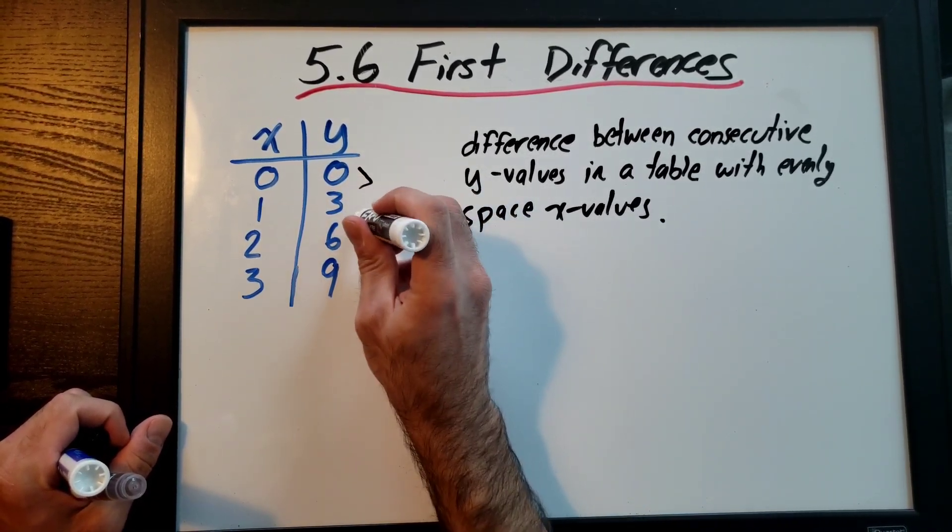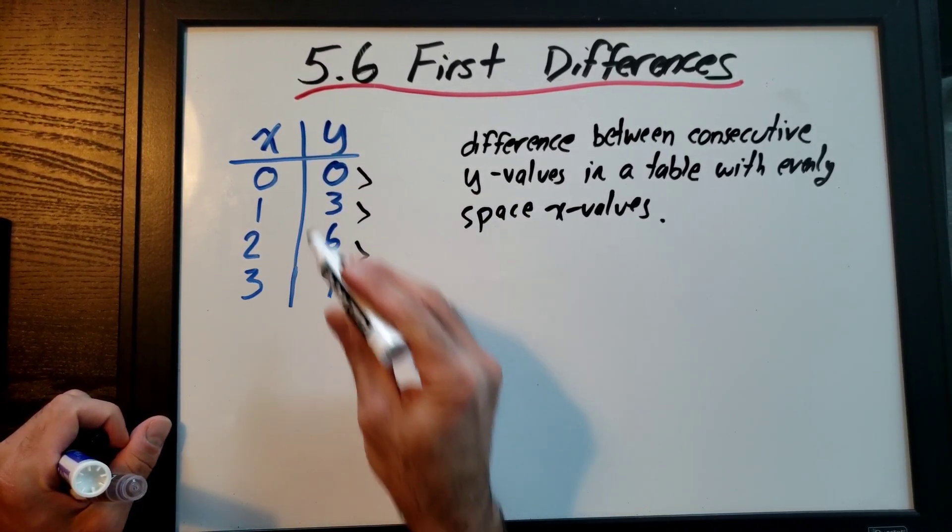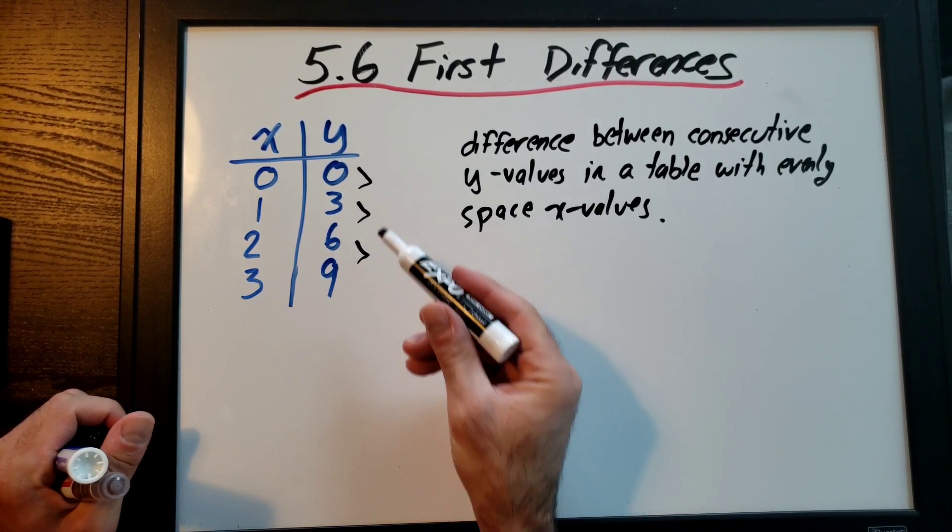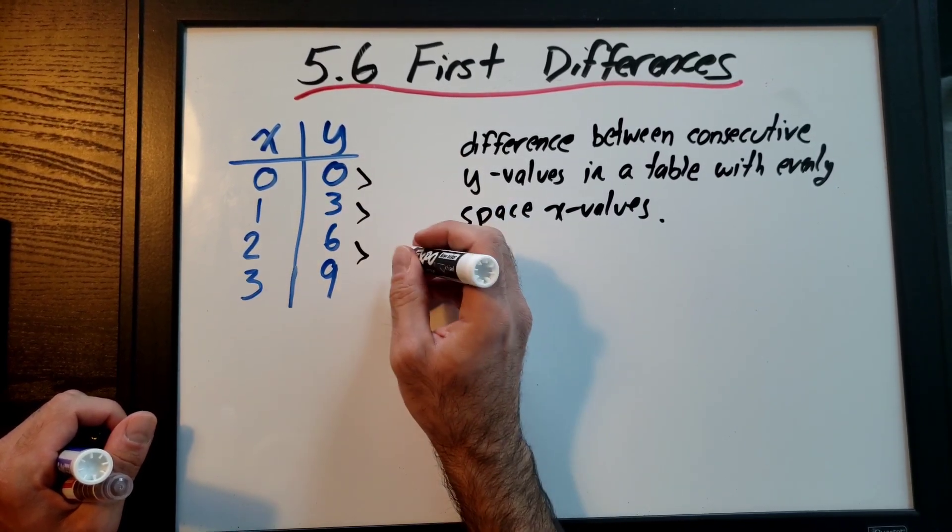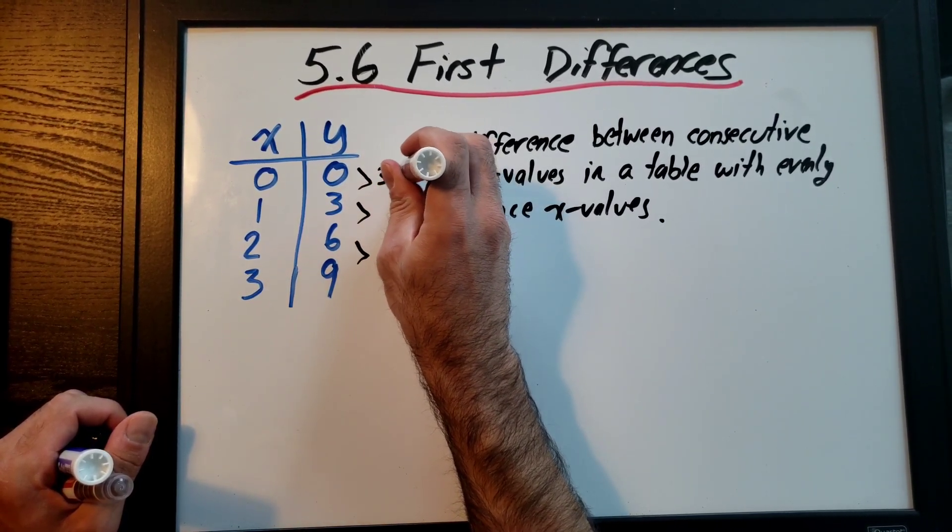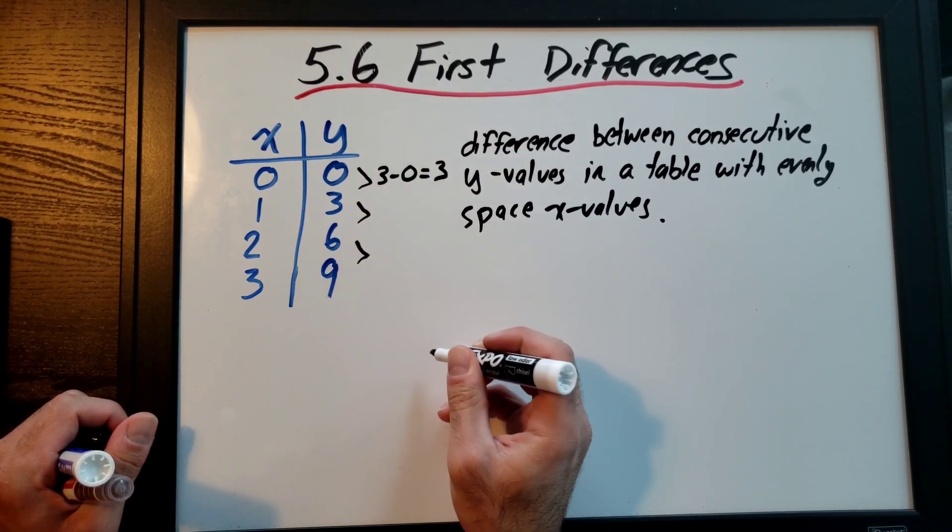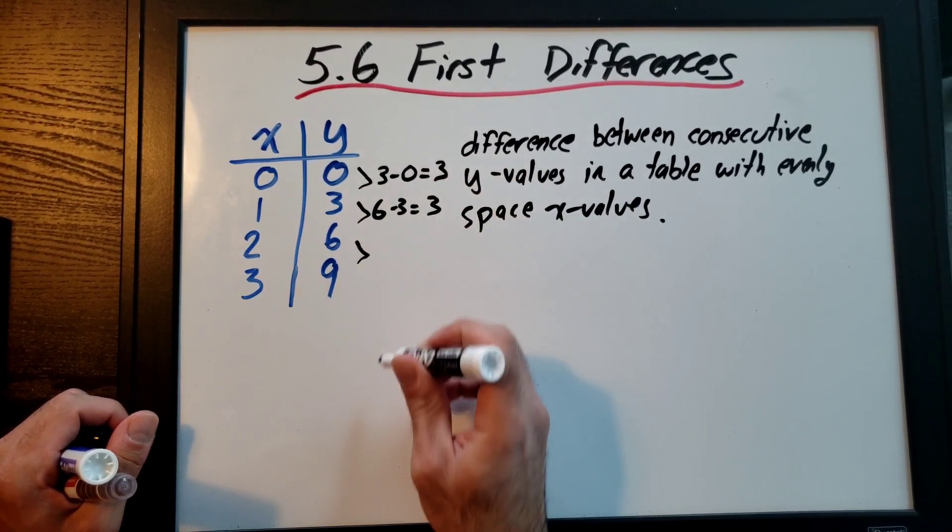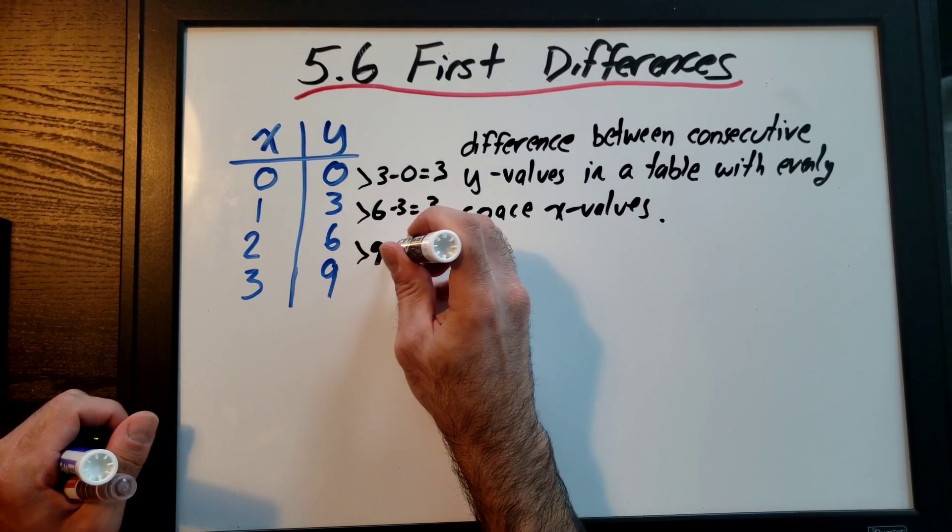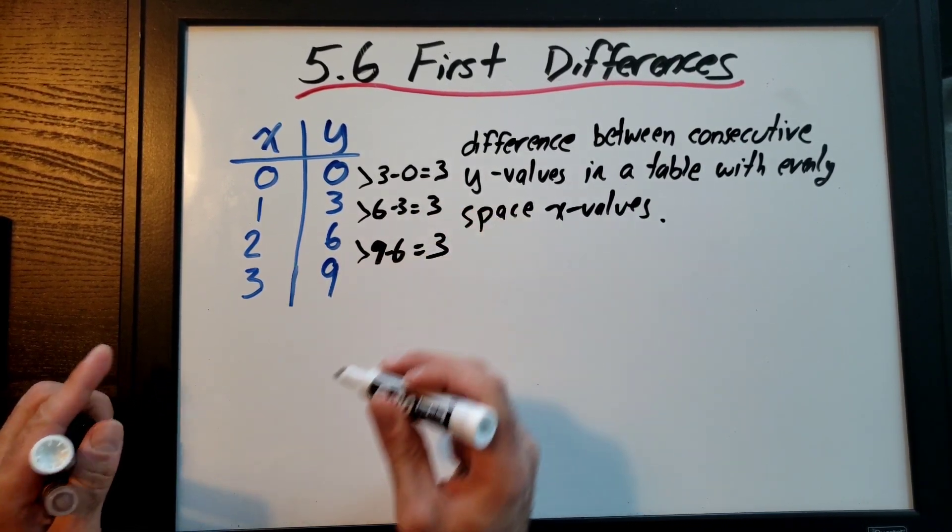Okay and how I subtract? I subtract the lower number minus the top number. This is 3 minus 0. 3 minus 0 is 3. This is 6 minus 3, 3. This is 9 minus 6, 3.